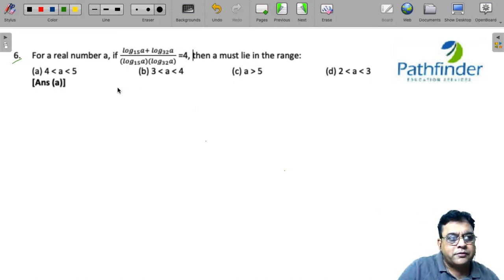Now, let us just copy this down here: log of a to the base 15 plus log of a to the base 32, whole of this divided by